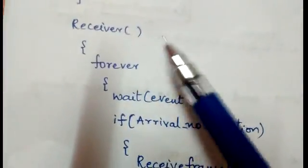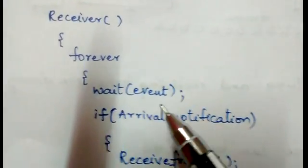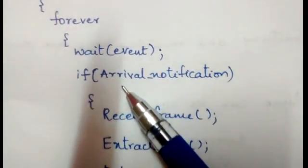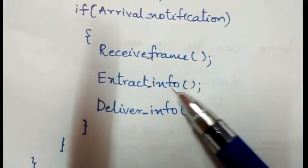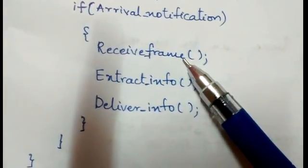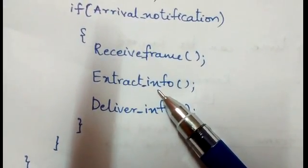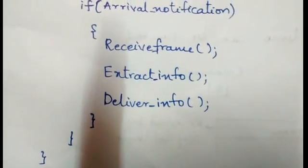On the receiver side, the receiver constantly runs and waits until the event occurs — that is, when the arrival notification comes. The physical layer receives the frame, the data link layer extracts the data, and the data is delivered to the network layer. That's all — this is the Simplest protocol, also known as the unrestricted simplex protocol.